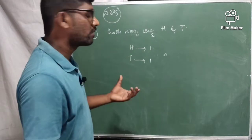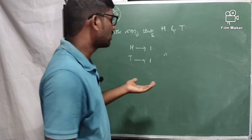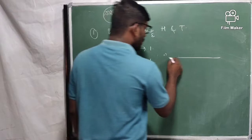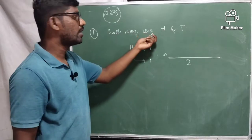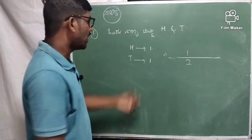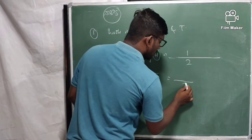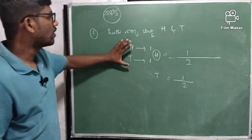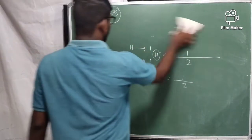Total outcomes are the same. We will get to know the outcomes — the head and the tail. In the case of head, it is 1 by 2. So the probability is 1 by 2. This is a probability: 1 by 2.